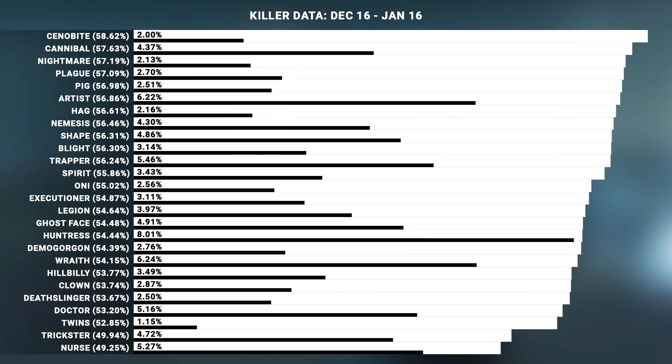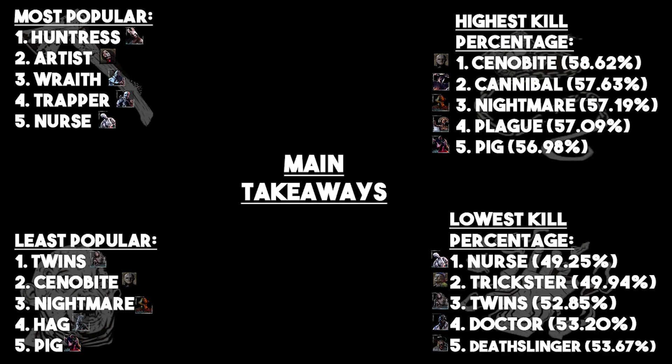One thing they didn't organize for us, but they gave us the numbers so we could do it ourselves, is how popular each killer is — who's playing who. The overwhelmingly most popular was the Huntress at 8.01. I wanted to take these numbers and see if there was anything interesting in them. My main takeaways were who's most popular, who's least popular, who's killing the most, and who's killing the least. I put together a quick chart in Photoshop.